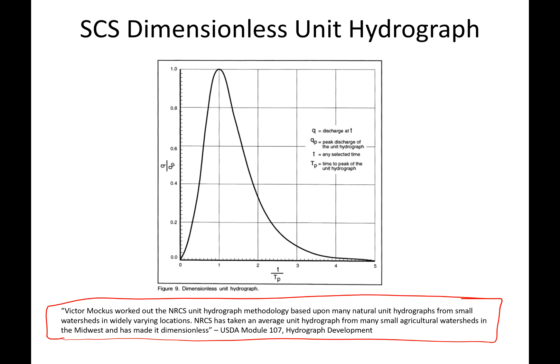What Victor did was he created lots of unit hydrographs for some Midwestern watersheds, averaged all of them, and then made the unit hydrograph dimensionless. He did this by dividing the y-axis (all the Q values) by the peak value Q-peak, and then dividing the x-axis by the time to peak.